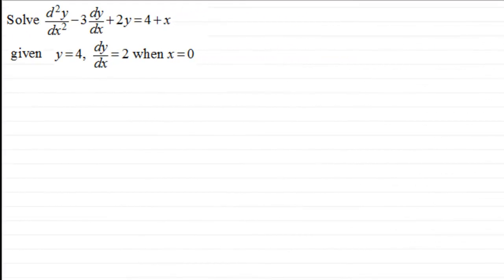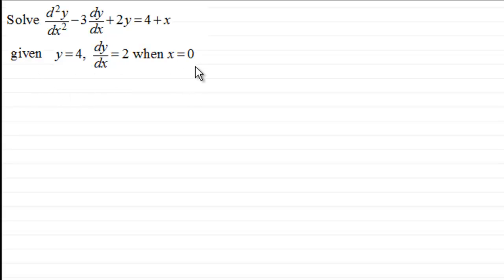Hi. I'm assuming that you've seen other videos in my series on solving second order linear differential equations. In those videos we were finding the general solution, but in this video I want to take it further and show you how we can find a particular solution. For that we need to be given boundary conditions — something like: y equals 4, dy/dx equals 2, when x equals 0.